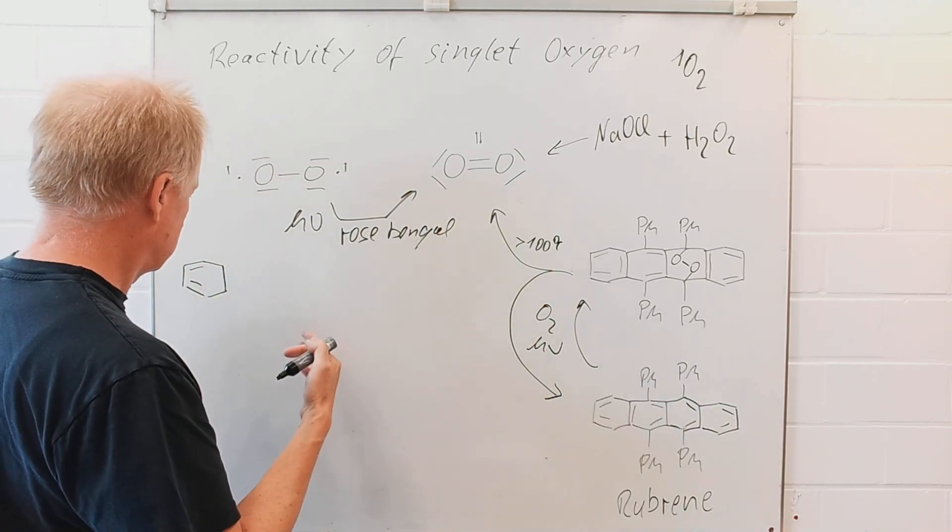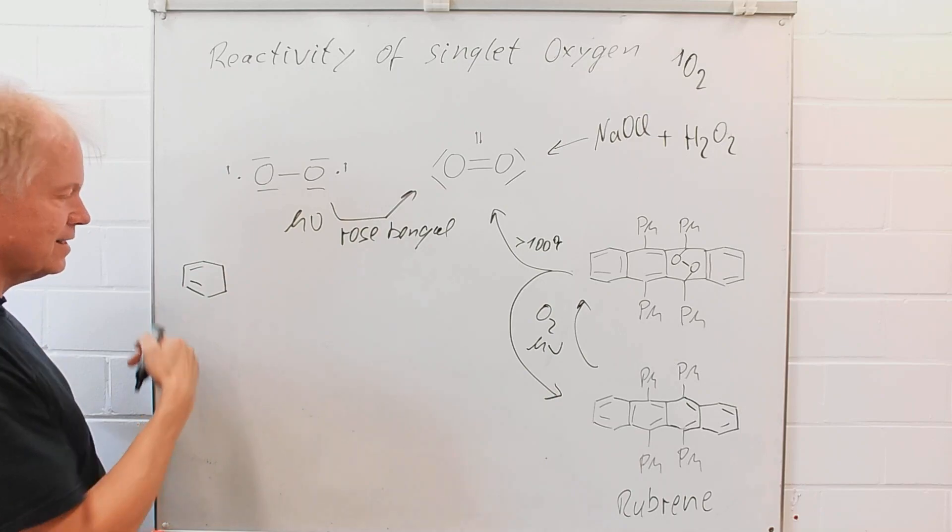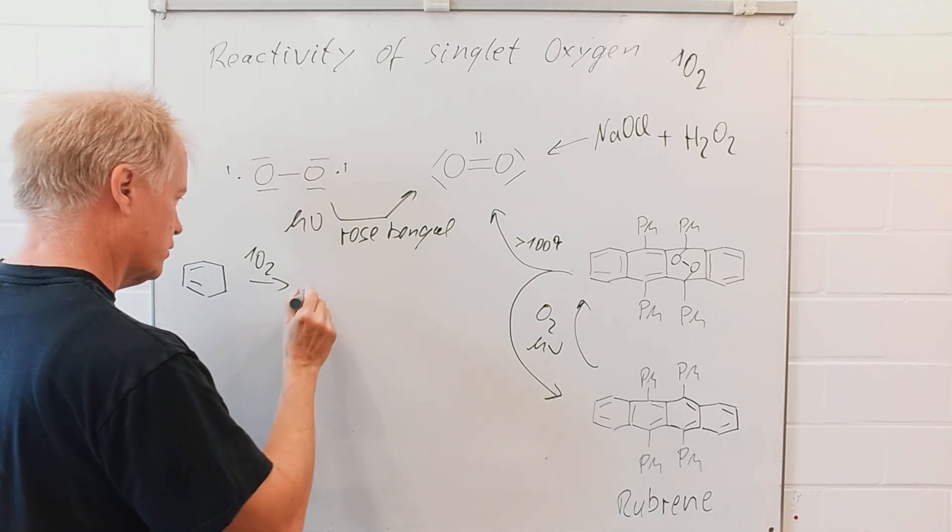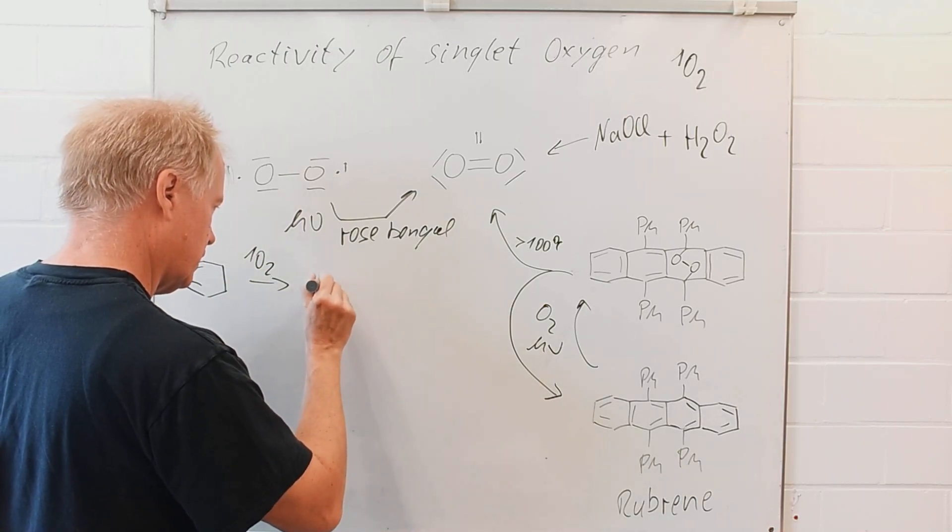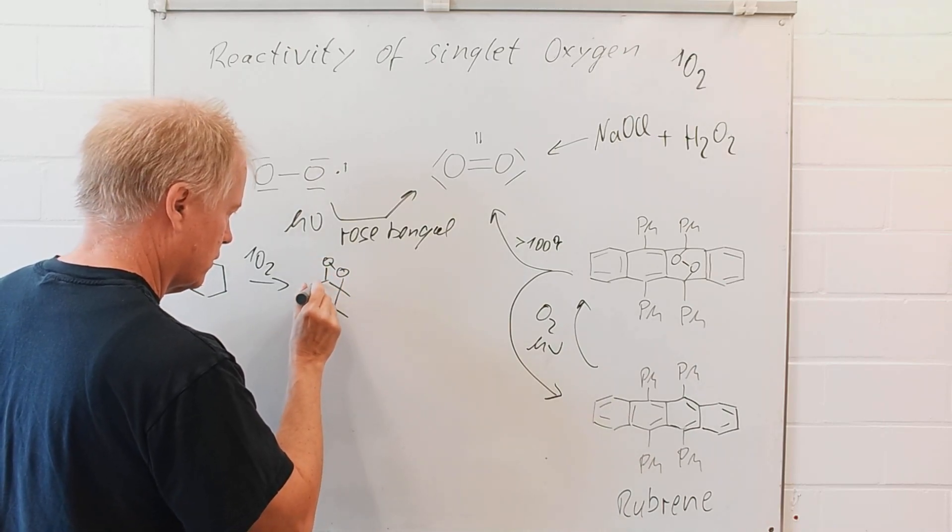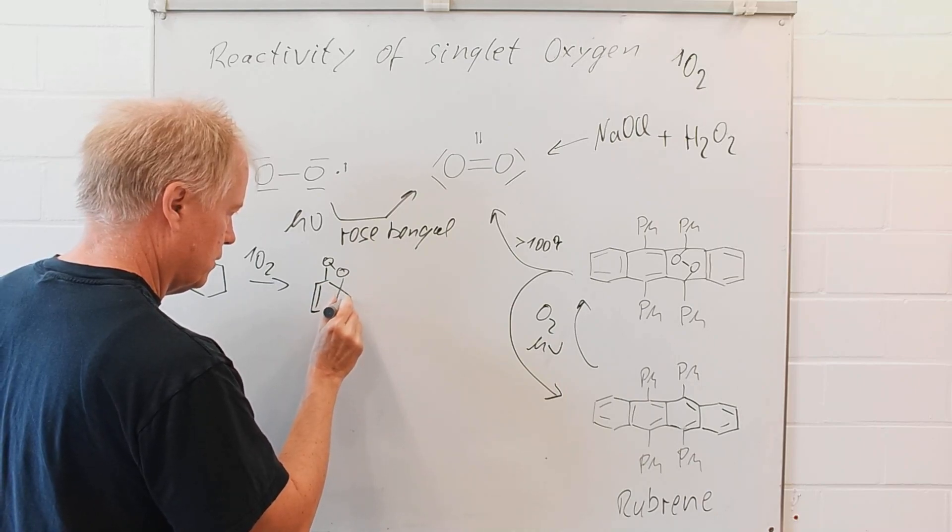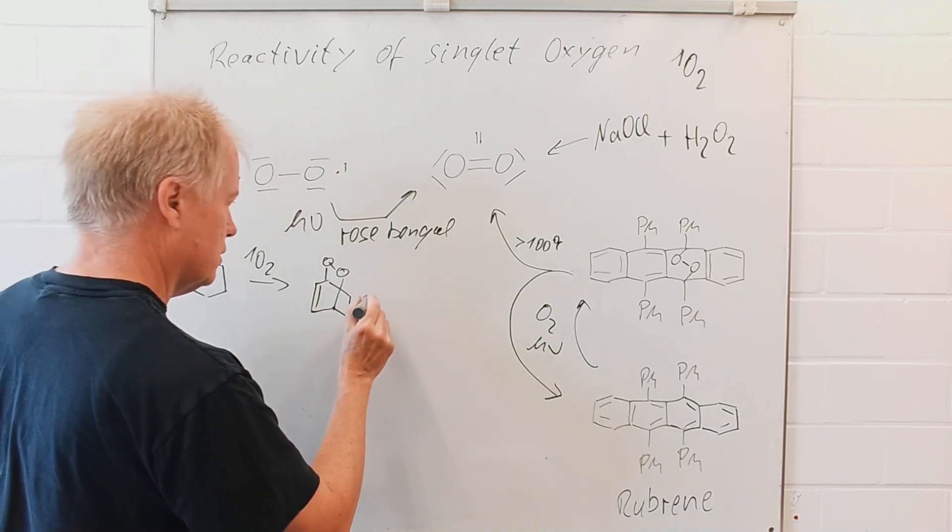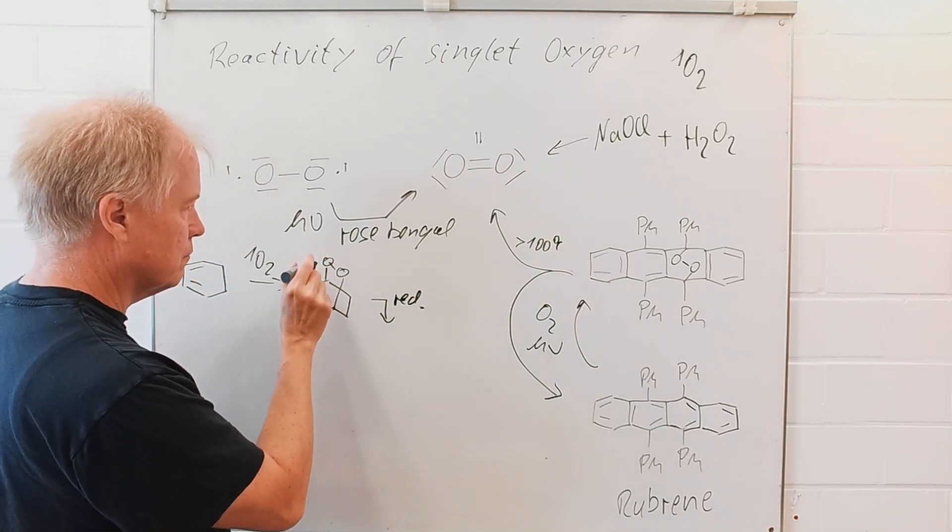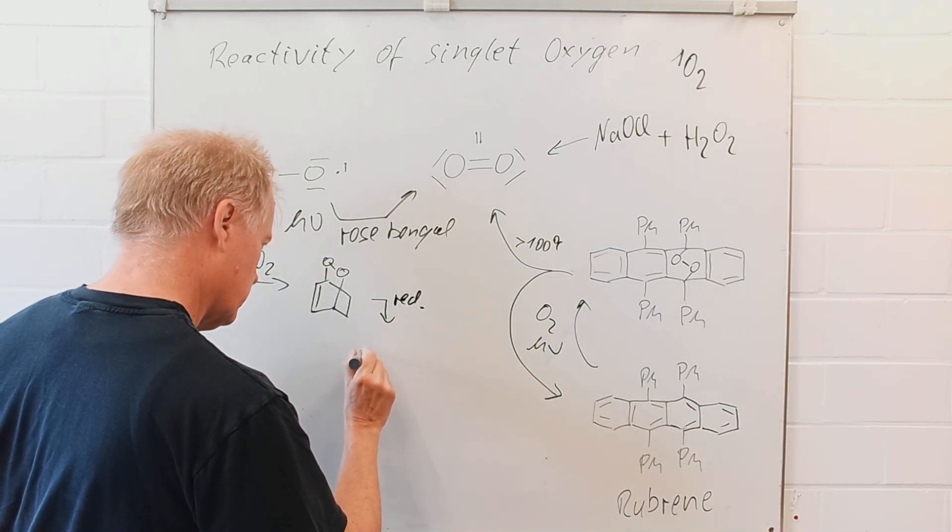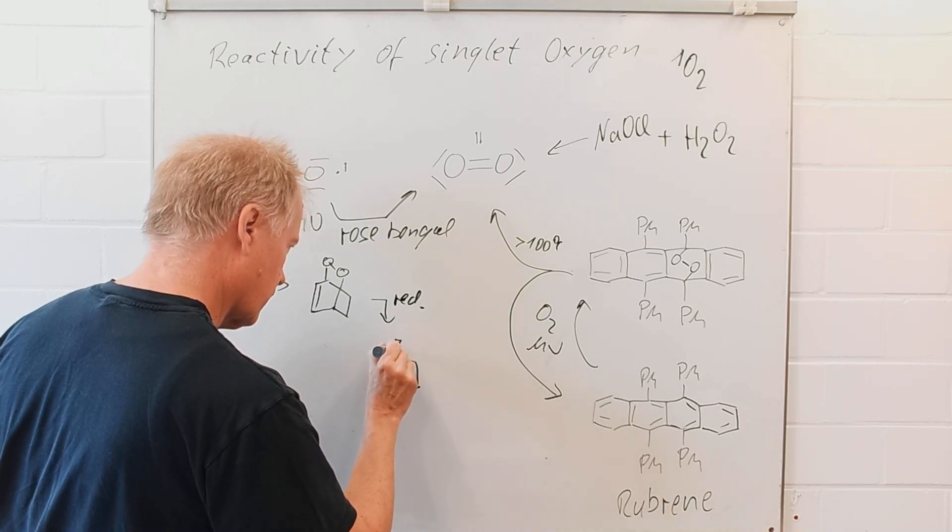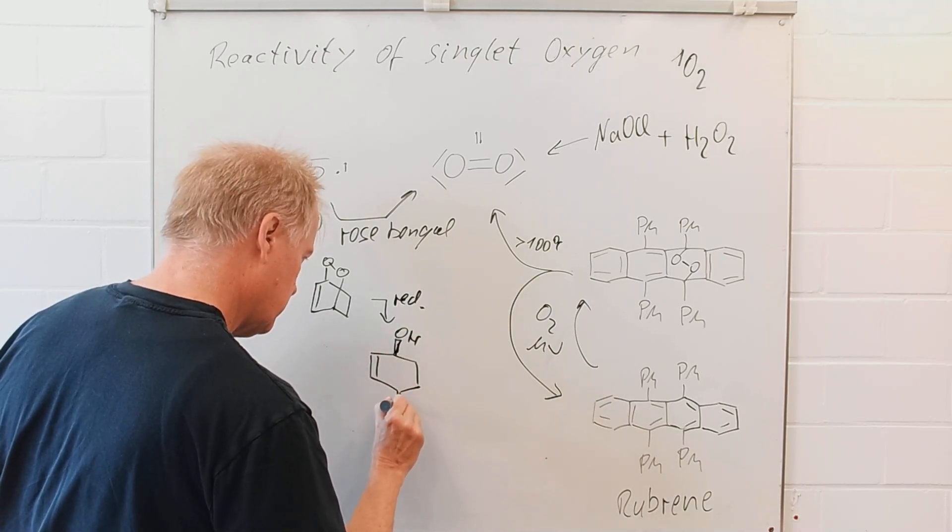For instance, if we have cyclohexadiene present with singlet oxygen, it will react to give a Diels-Alder product, the so-called endoperoxide, and reducing the oxygen-oxygen bond will lead us to the diol.